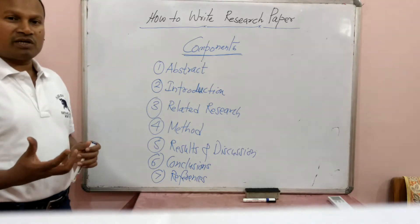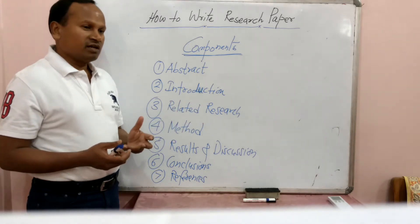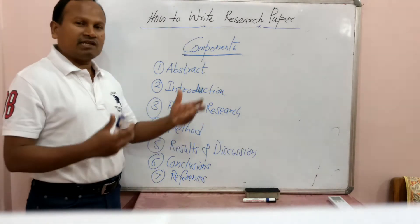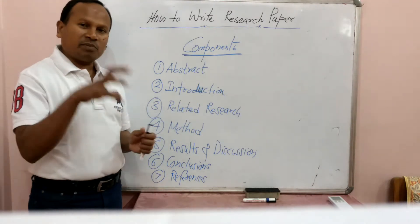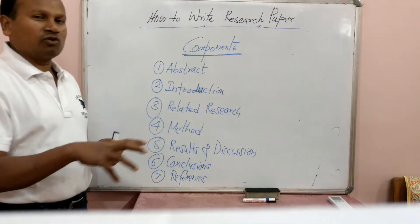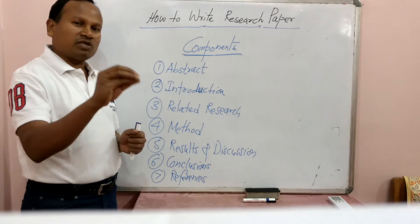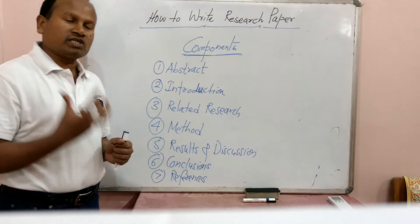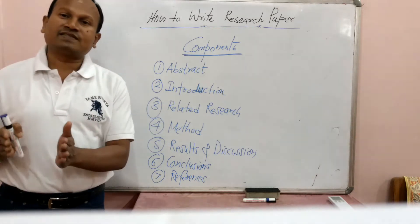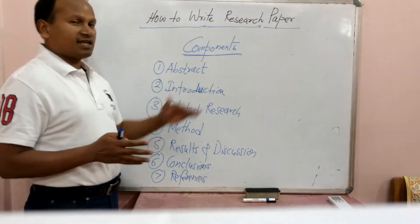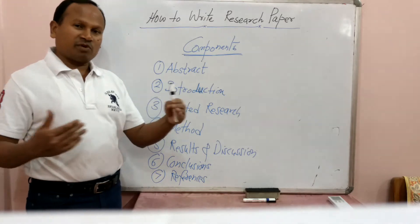If we understand the different stages and components of a research paper and what is expected in each component, writing a research paper is a very simple and easy task. A research paper is something wherein we take one topic — that topic may be from any subject, any research area, any area of interest, whichever topic you want to select. After choosing and selecting a topic — we can discuss separately about how to choose the topic, that is another aspect — but here in this lecture, we are more interested to discuss about how to write the research paper.